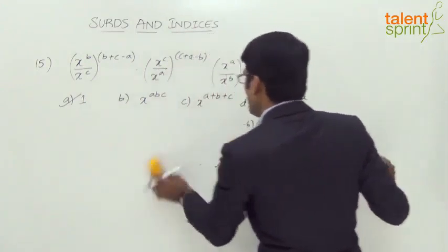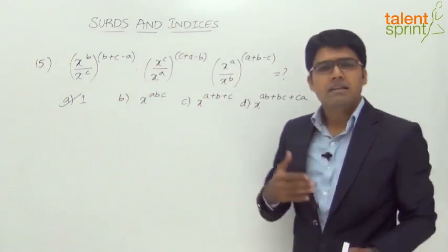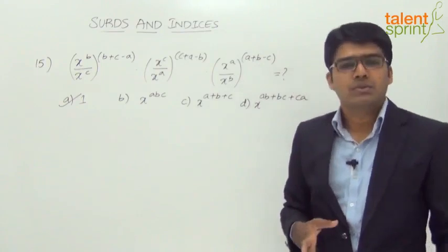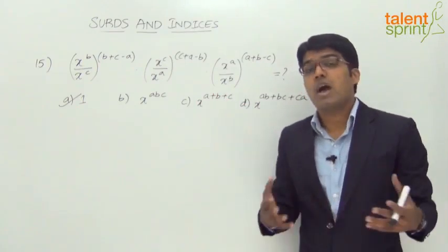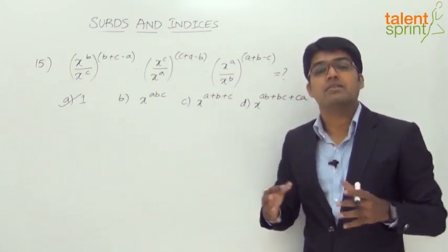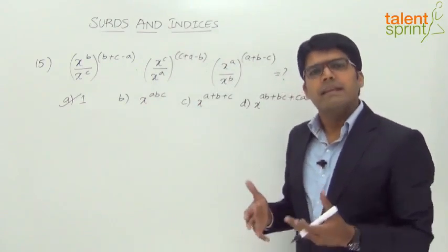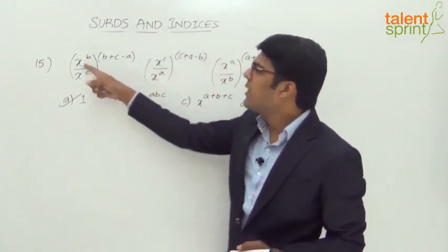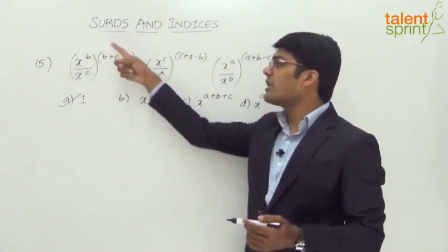We substitute random values for x, a, b, and c, then check which answer option satisfies the expression. However, we must pick values carefully. If we take x=1, every option gives 1, because 1 raised to any power is 1. So all four options would equal 1, which doesn't help us eliminate any options.